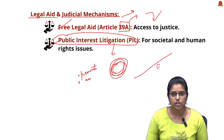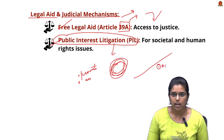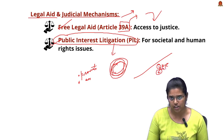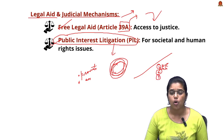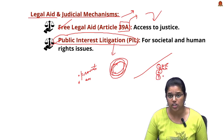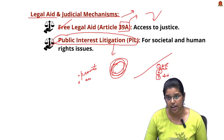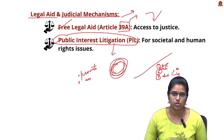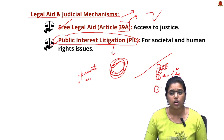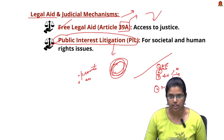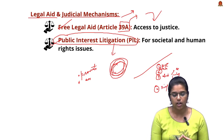To conclude the second editorial: we saw what the RTE Act is, had a short look at madrasas, discussed provisions to ensure child rights in India — constitutional provisions, legal provisions, and national institutions — and saw provisions to ensure social justice in India. Now let's move to the next editorial.